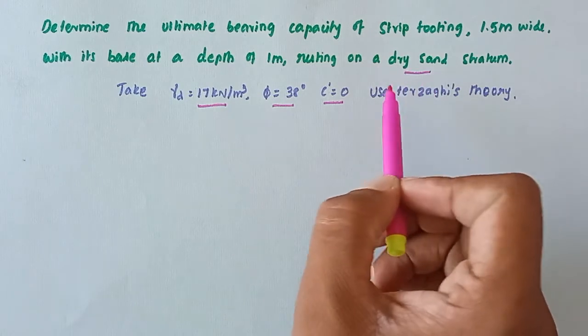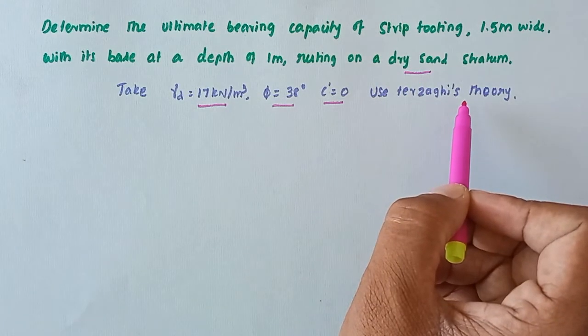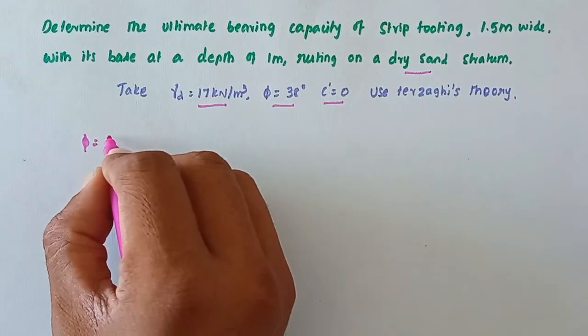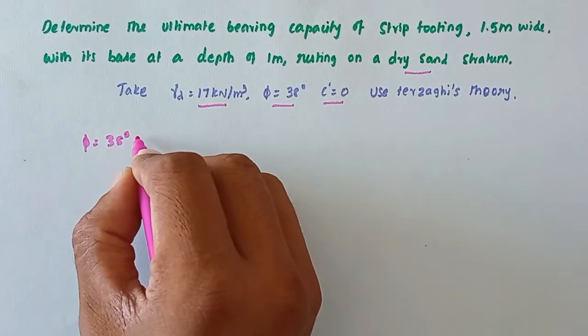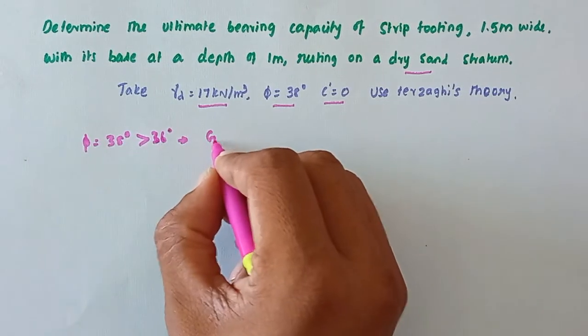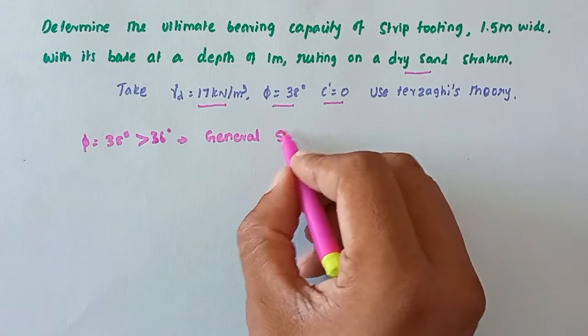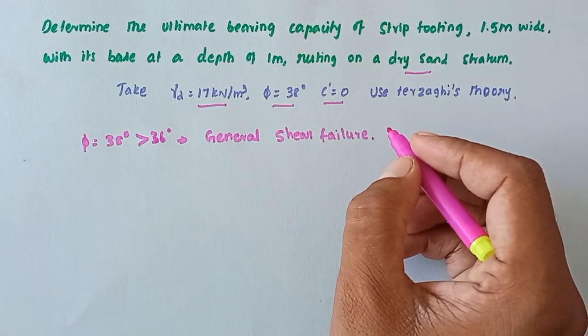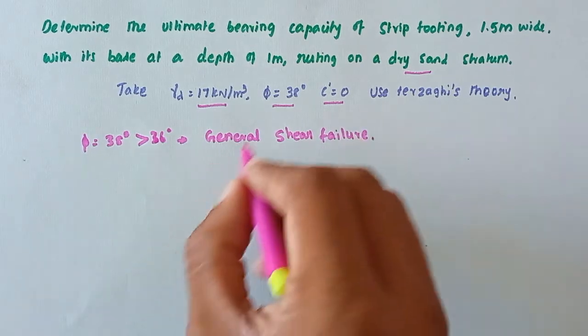So now φ = 38°, so that is more than 36°, so it is general shear failure. For general shear failure, we can take for strip footing